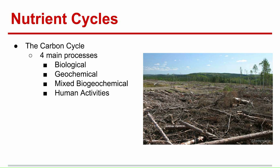Nutrients are the chemical building blocks that organisms need to sustain life. For the carbon cycle, there are four main processes. There's biological, such as photosynthesis, respiration, and decomposition. This takes carbon from the atmosphere or around the organisms and releases oxygen.